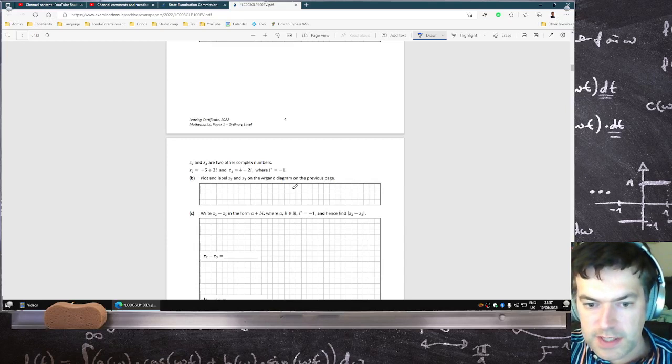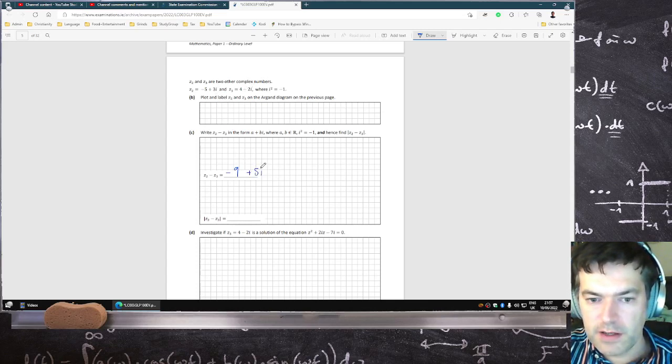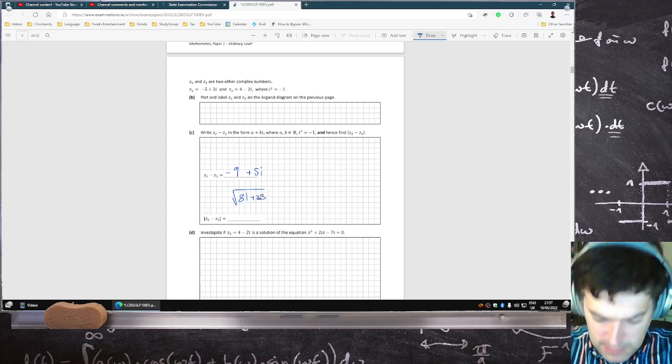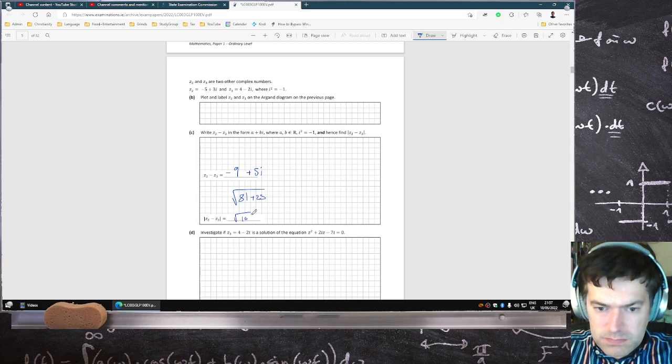Right Z2 minus Z3. Okay, so Z2 minus Z3 minus 5 minus 4 is minus 9. 3i minus minus 2i is 5i. And what's its modulus? So that's going to be the square root of 81 plus 25. I wonder if that is anything nice. Root of 106. Okay.